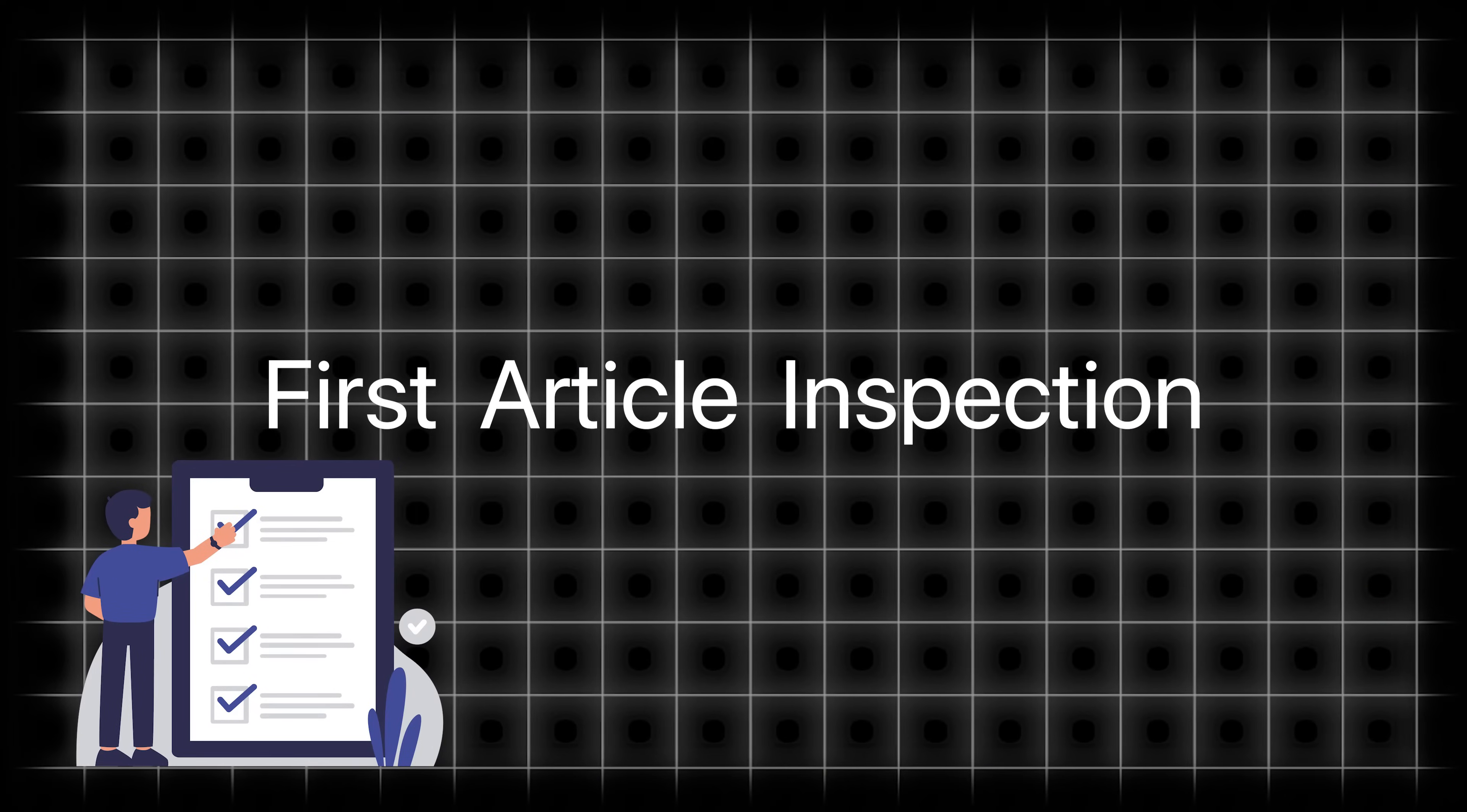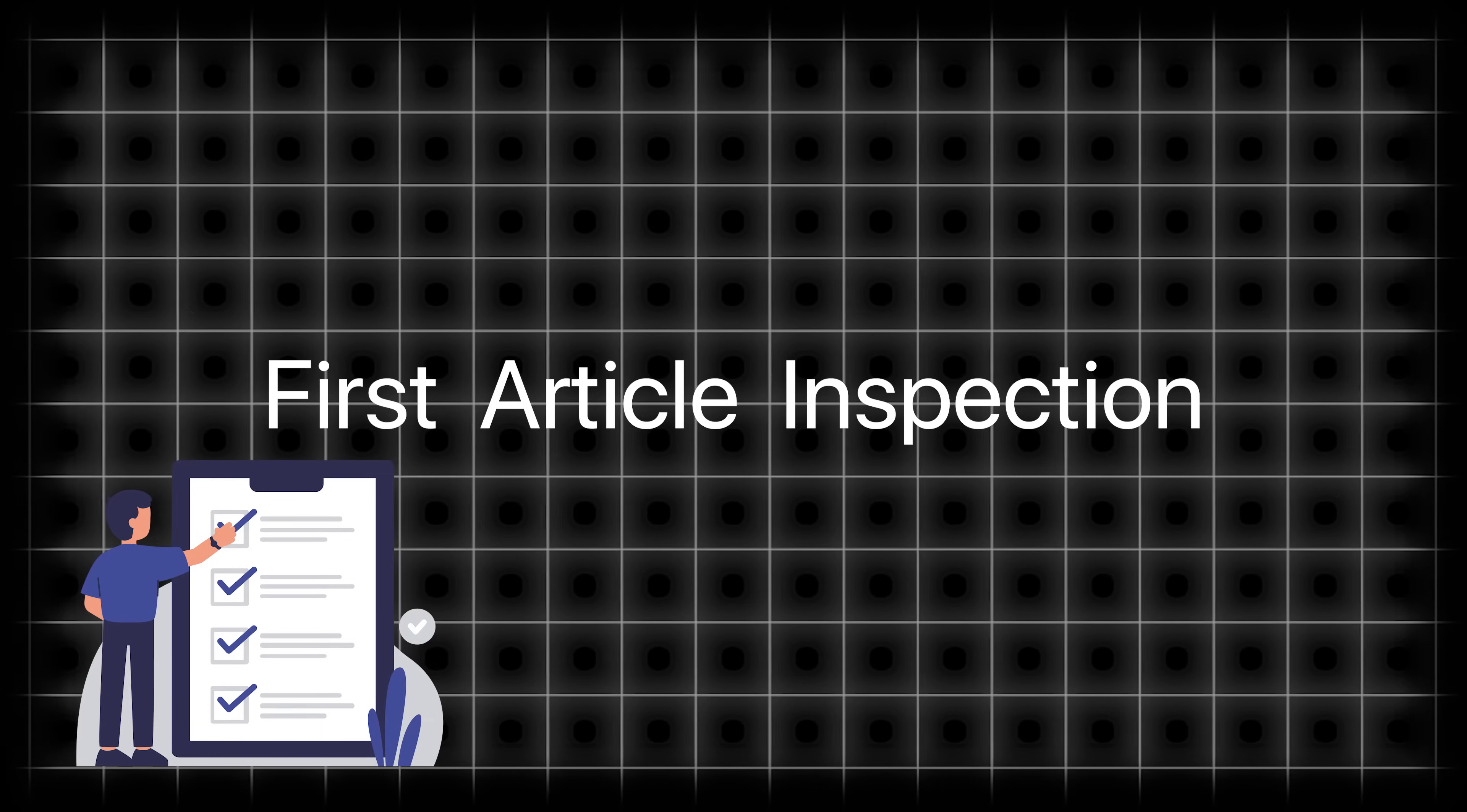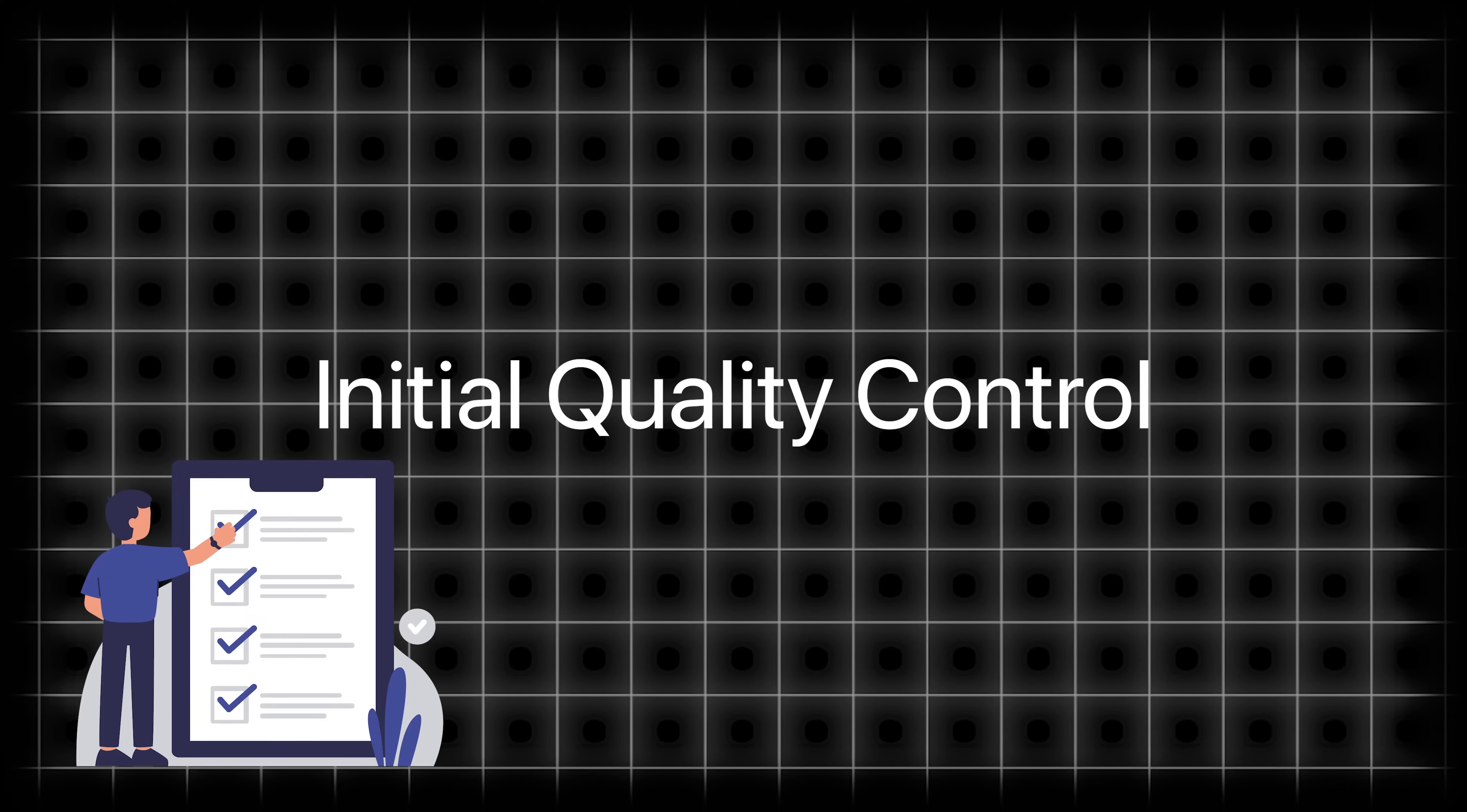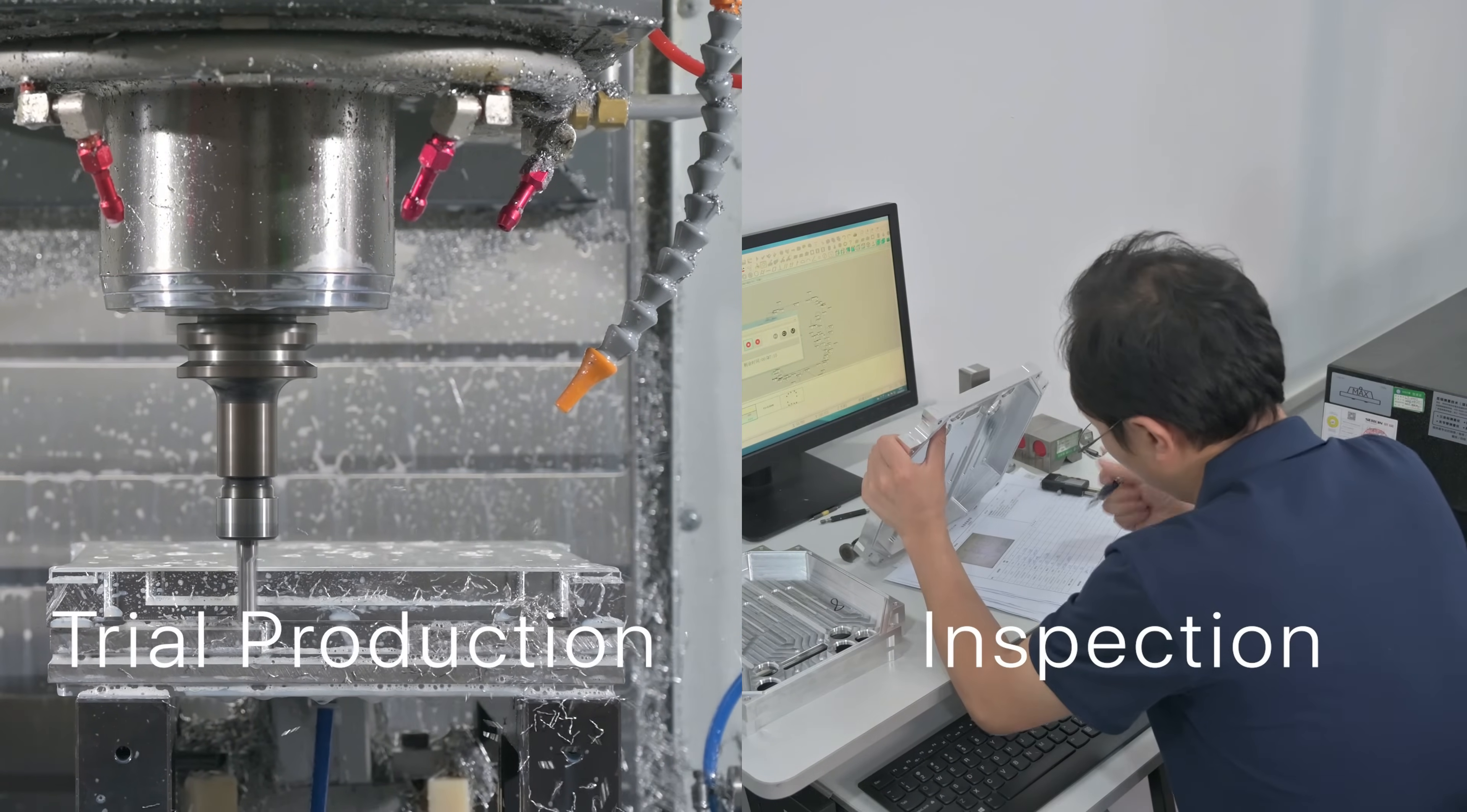Is FAI, First Article Inspection, really necessary? First Article Inspection is also known as Initial Quality Control. It consists of two processes: trial production and inspection.